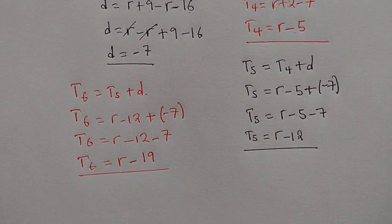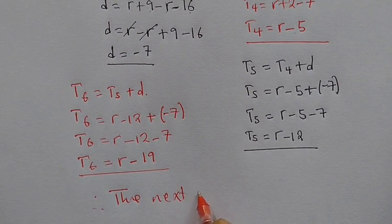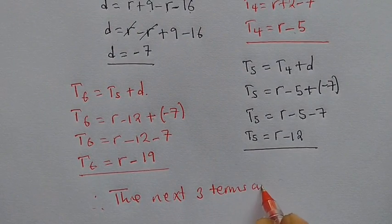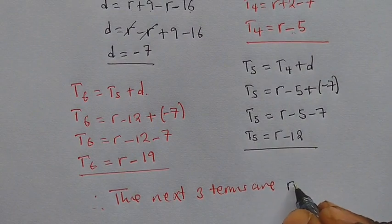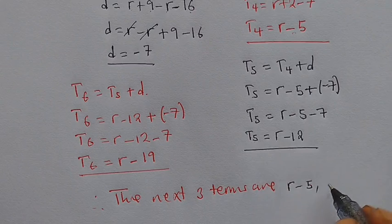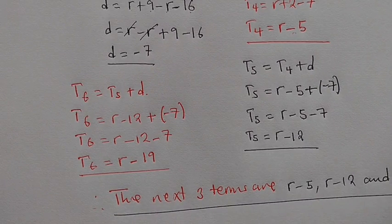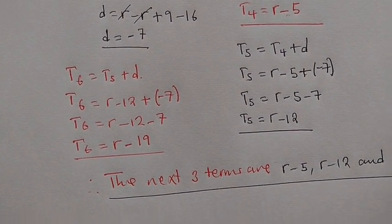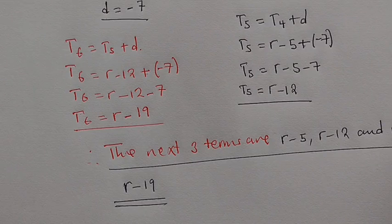So we can now make a statement. Therefore, the next three terms are: term four is R minus 5, term five is R minus 12, and term six is R minus 19. That is our answer. I've come to the end of our lesson. Thank you so much everybody for taking the time to view this content.